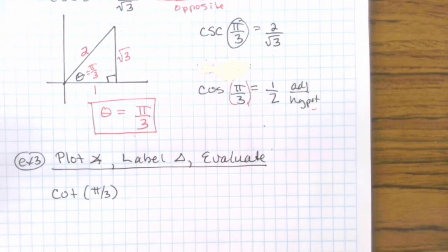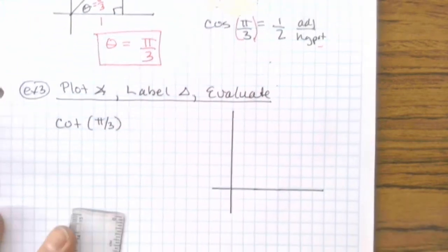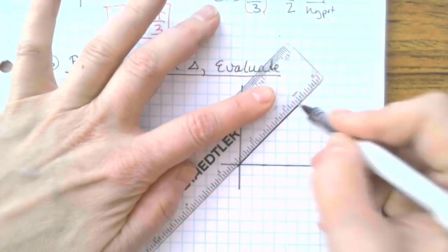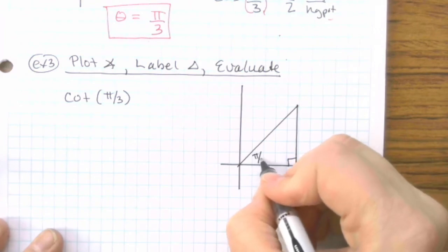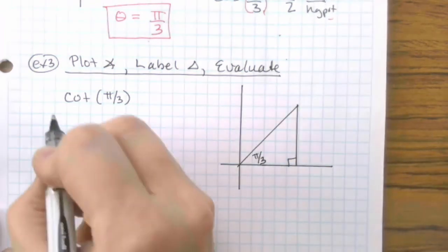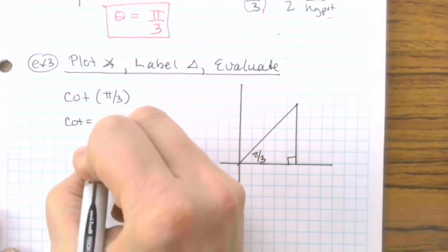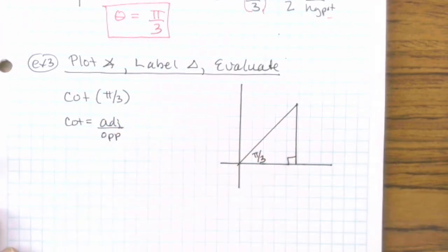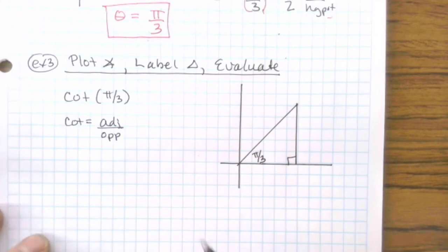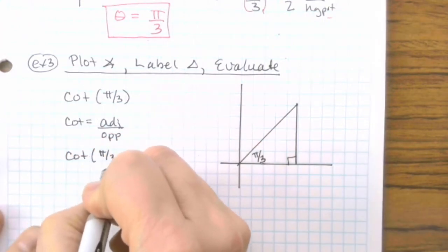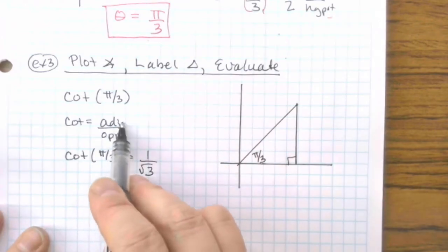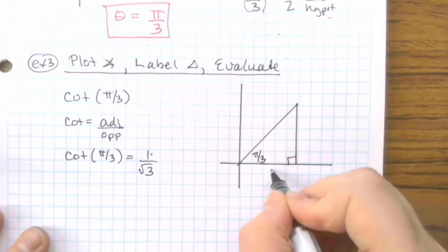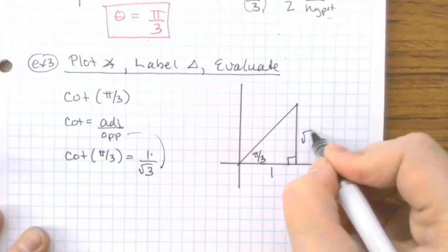We assume it's in the positive quadrant because there's no reason to believe otherwise. So draw yourself a pair of axes. Draw a reference triangle, which is a right triangle. And our theta is π/3. Now to do this one, you need to remember that cotangent equals adjacent side over opposite side. So when we know that cotangent of π/3 actually equals 1 over radical 3, the adjacent side is 1. The opposite side is radical 3.